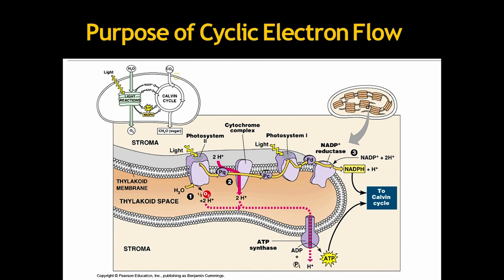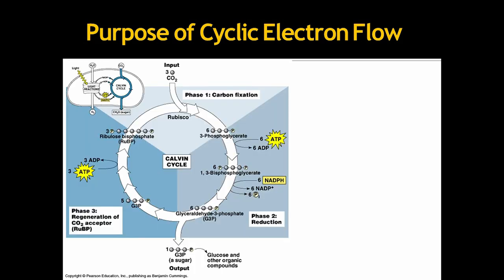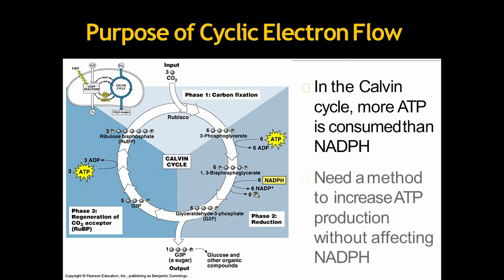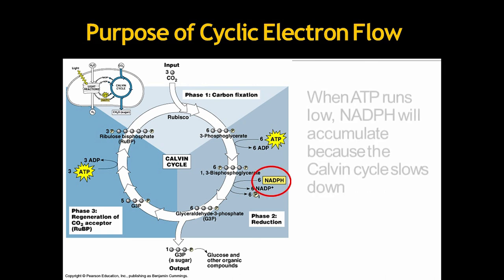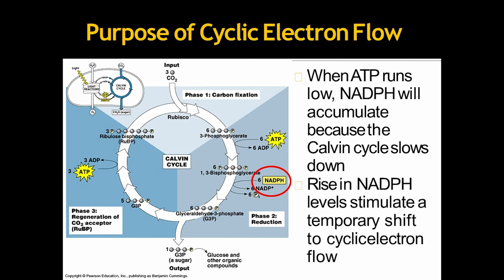So, what are the purpose of cyclic electron flow? Non-cyclic electron flow produces roughly equal quantities of ATP and NADPH. In the Calvin cycle, more ATP is consumed than NADPH. Need a method to increase the ATP production without affecting NADPH is necessary. When ATP runs slow, NADPH will accumulate because the Calvin cycle slows down. Rise in NADPH levels stimulate a temporary shift to cyclic electron flow, which helps to balance that and produce more amount of ATP.